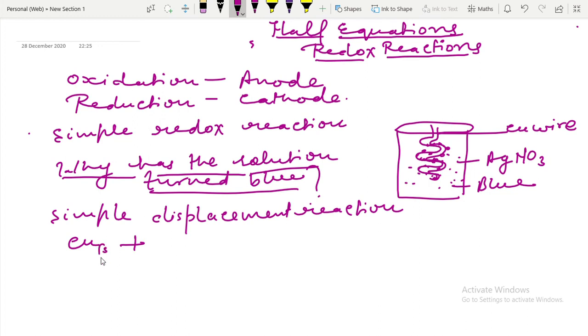When copper reacts with silver nitrate, it turns into silver and copper nitrate.